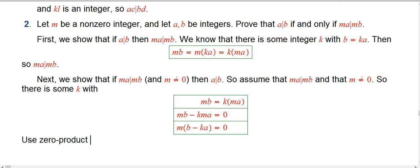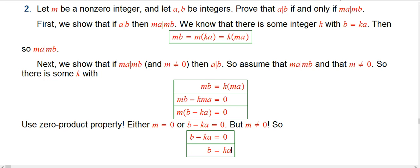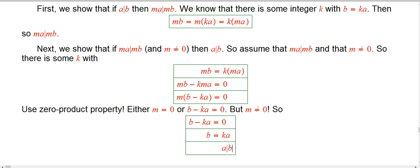Now, we use the zero product property. Big time. Okay. So, either M equals zero. If I just give you that equation, nothing else, or B minus KA equals zero, that's what I would conclude. But, this is where we use, we've excluded the possibility that M is equal to zero. And so, B minus KA equals zero. And then, put that on the other side. Hey, B equals KA. Or, in other words, A divides into B. Okay.